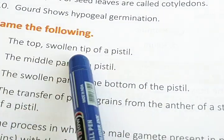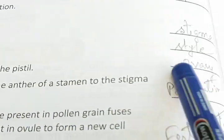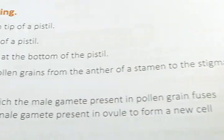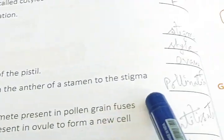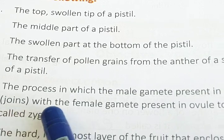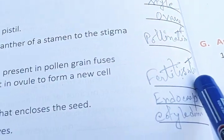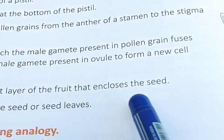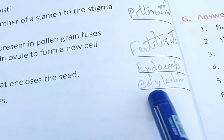Name the following: the top sole and tip of the pistil — that is the stigma. The middle part of a pistil — that is the style. The basal or bottom part of the pistil — that is the ovary. The transfer of pollen grains from the anther of a stamen to the stigma of a pistil — that is pollination. The process in which the male gamete in the pollen grains fuses with the female gamete in the ovule to form a new cell called a zygote — that is fertilization. The hard innermost layer of the fruit that encloses the seed — that is the endocarp. The fleshy part of seeds or seed leaves — that is cotyledons.